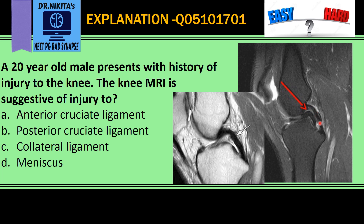Now, if you see in this image in the question, that is the posterior cruciate ligament posteriorly, but anterior to it we see another structure that looks like the posterior cruciate ligament. So it appears as though there are two PCLs — this is called the double PCL sign.